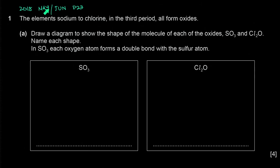Today we're doing May/June 2018 Paper 23, Question 1. The question says elements sodium to chlorine in the third period all form oxides. Draw a diagram to show the shape of the molecule of each of the oxides SO₃ and Cl₂O, and name each shape.